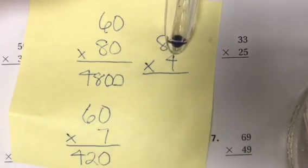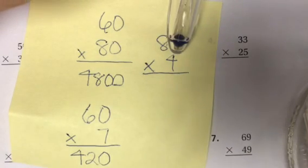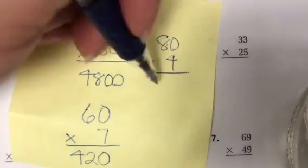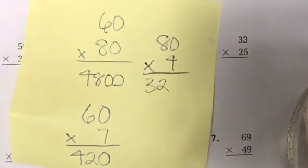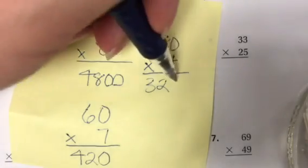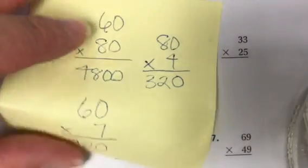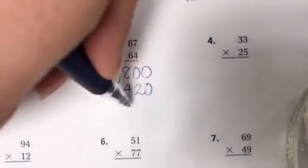I can cover up this zero and use the base fact 8 times 4 which is 32. I covered up one zero so I want to make sure I add that back on. So I need to add the partial product 320.